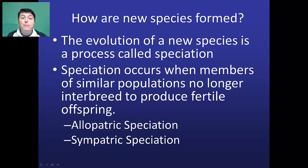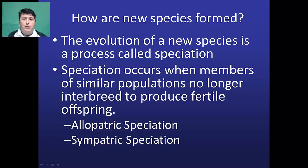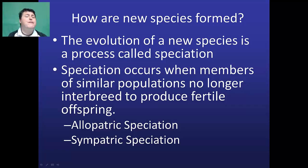The formation of new species is a process known as speciation. Speciation occurs when members of similar populations can no longer interbreed to produce fertile offspring. There are many different mechanisms for speciation; we're going to focus on two here: allopatric speciation and sympatric speciation.